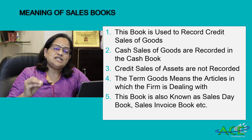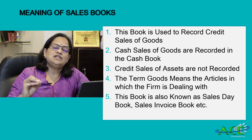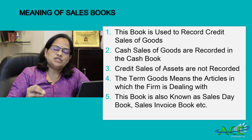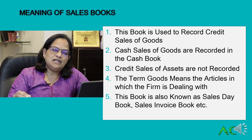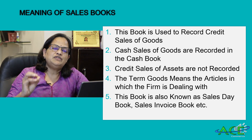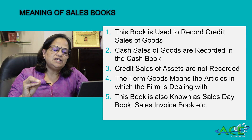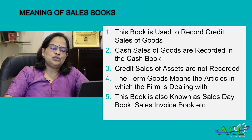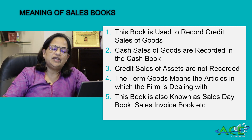Remember, if you are purchasing an asset on credit, it will not be recorded in the sales book because it is a capital item. It will go to journal proper. The sales book records only goods the firm regularly deals with — for example, cement for a cement dealer, granite for a granite dealer. This book is also known as the sales day book or sales invoice book.